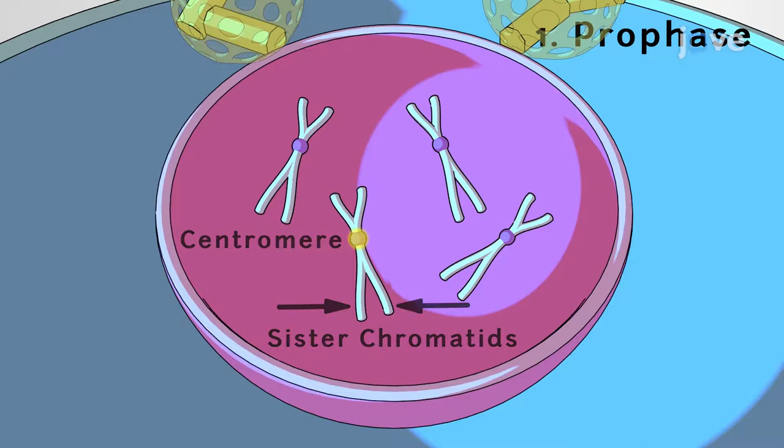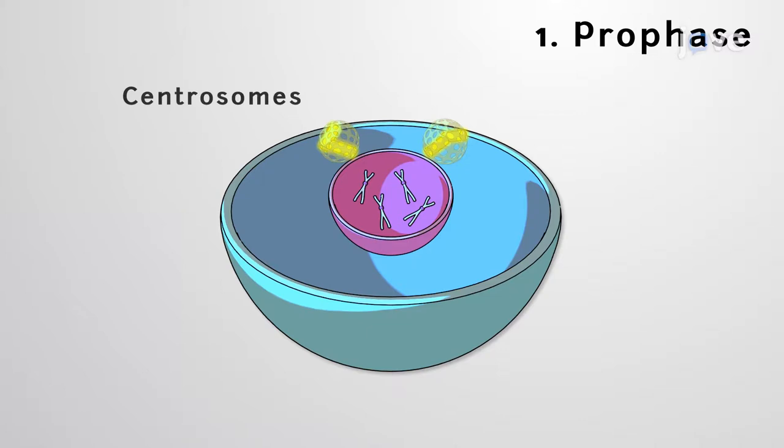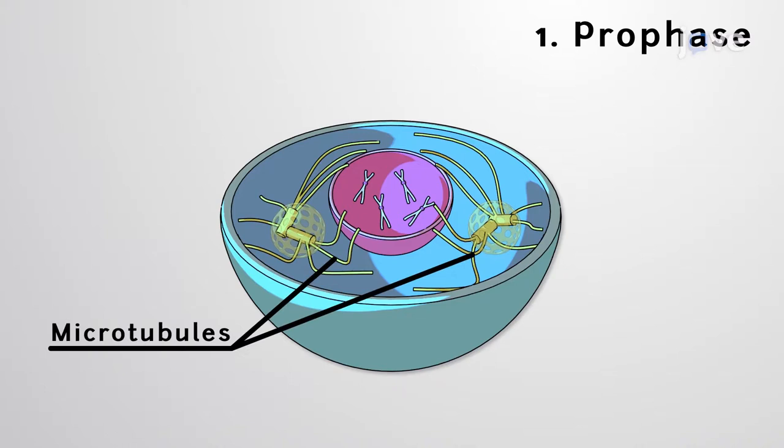Concurrently, outside the nucleus, two L-shaped organelles called centrosomes migrate to opposite cell sides. As they do so, microtubule rods begin to grow from each, either towards the cell's interior or exterior, forming a web-like spindle apparatus.